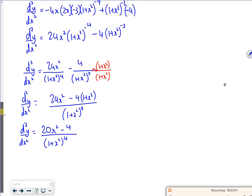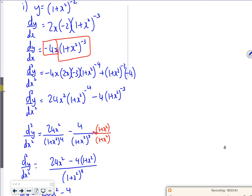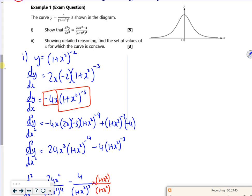Part 2 says, we're back up here, show with detailed reasoning, find a set of values where it's concave.